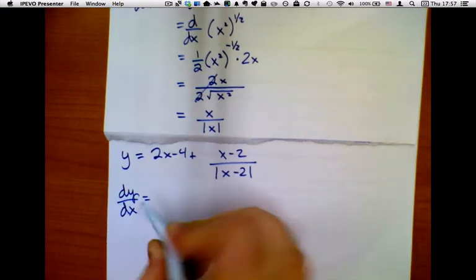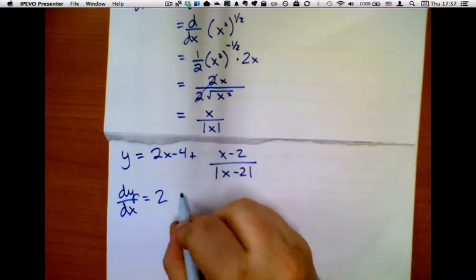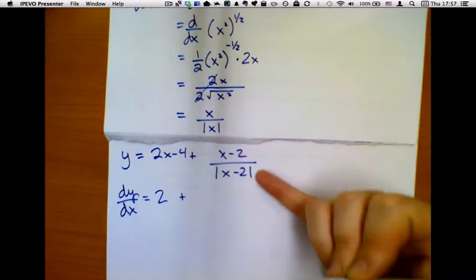The first part is really easy. The derivative of 2x is 2. The derivative of negative 4 is 0. Plus, and now we need the derivative of this.